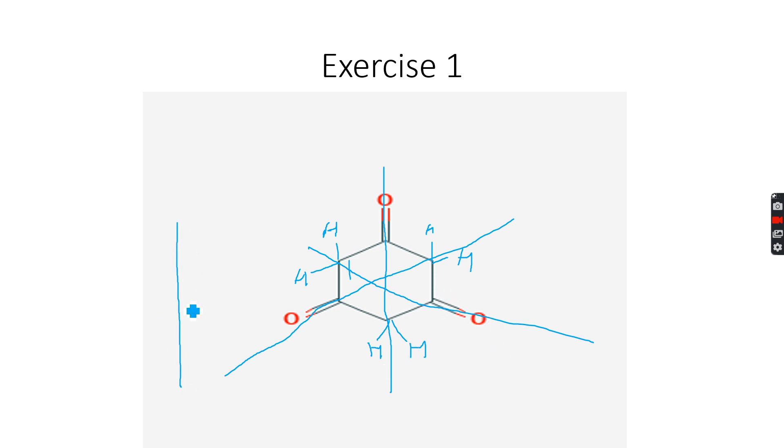So again, we'll get a singlet integrated to six because six protons contributing to it. No splitting because no neighboring carbon atoms have hydrogen atoms attached to it. And we have the same chemical environment for all three CH2 groups.